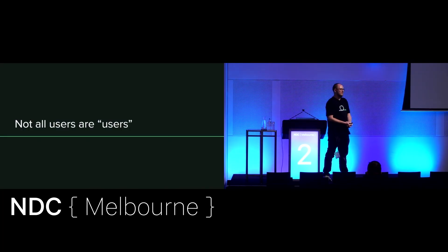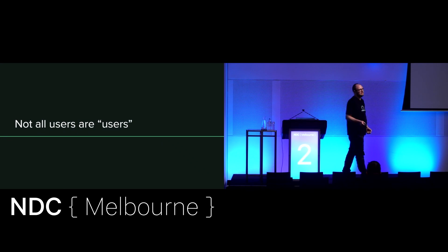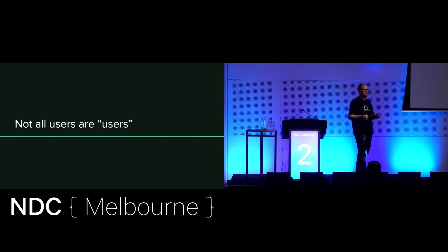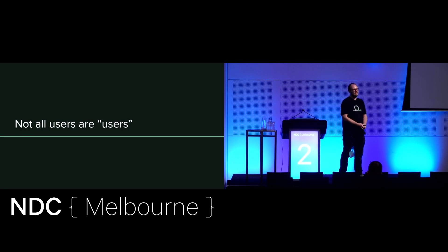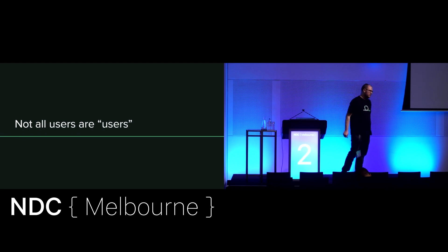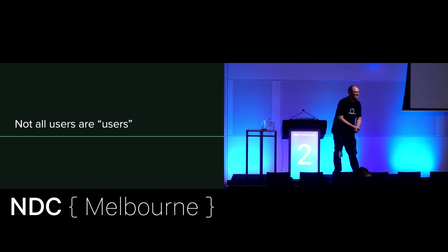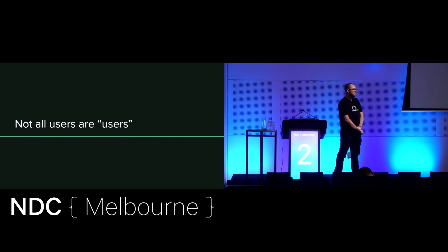When we're talking about users and accessibility, almost all of the talks and standards are about how users interact with the front-end of the application. But not all users are users of the application's front-end. As a back-end developer, I almost never see the front-end. But I am using the software every day when I open and look at the source code, every time I connect to an API. I'm using the software, but I'm not considered to be a user.